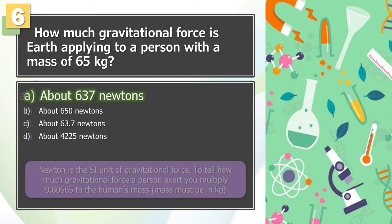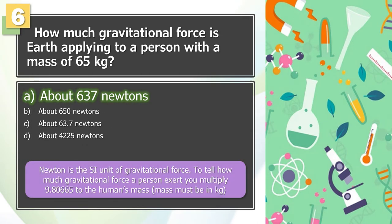The answer is A. Newton is the SI unit of gravitational force. To tell how much gravitational force a person exerts, you multiply 9.80665 to the human's mass. Mass must be in kg.